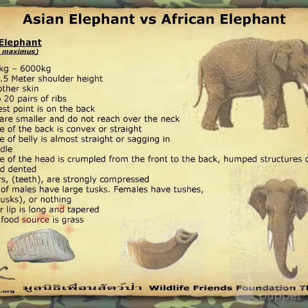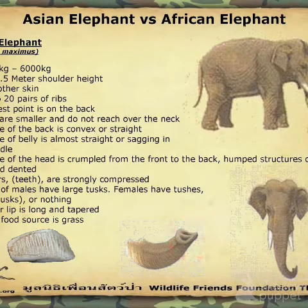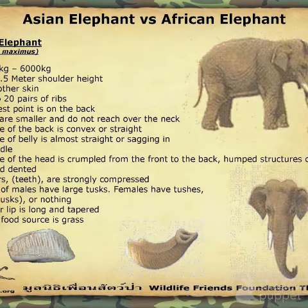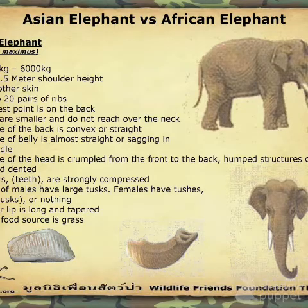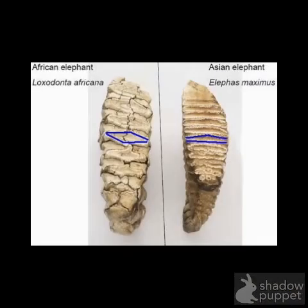Their teeth are different. Even the tips of their trunks are different. With tusks, in the Asian elephant both male and female have tusks, whereas in the African elephant only the male has tusks.